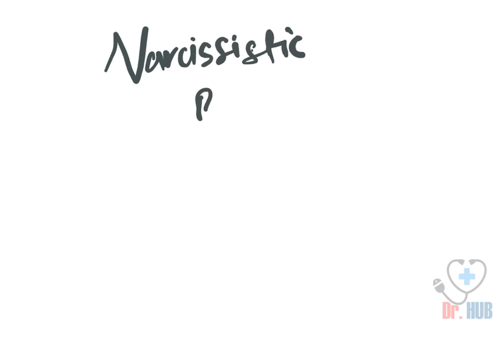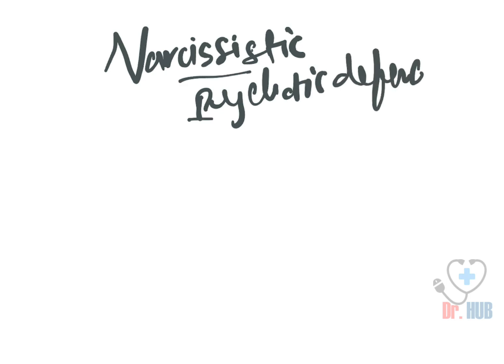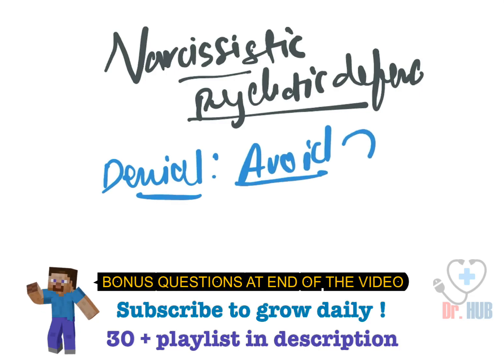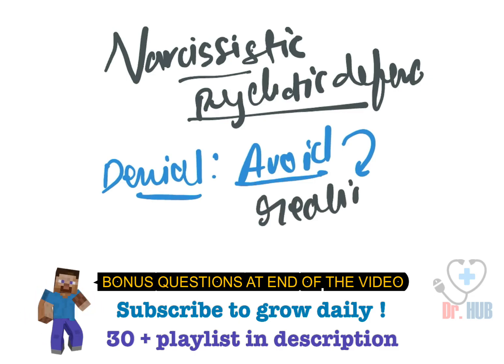Firstly, we are going to look at groups. We will deal with the narcissistic/psychotic defenses. The first one is denial. Denial means that it is used to avoid becoming aware of some painful aspects — the patient avoids the painful aspects of reality.